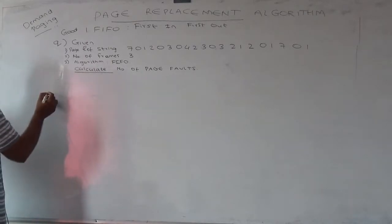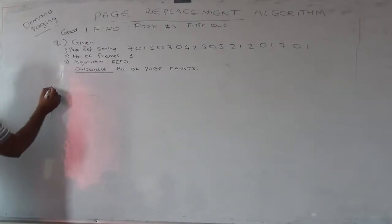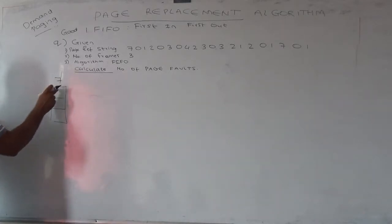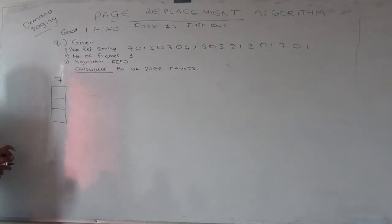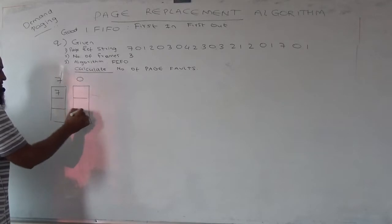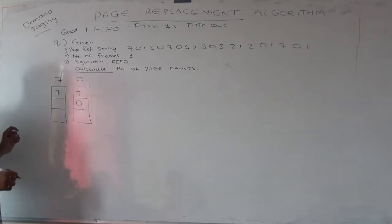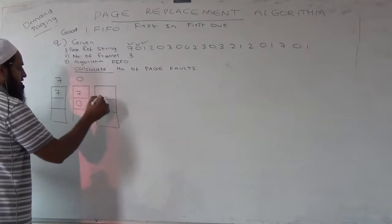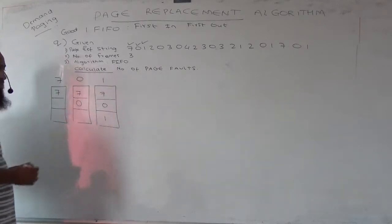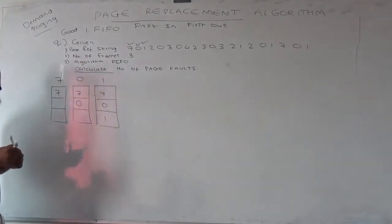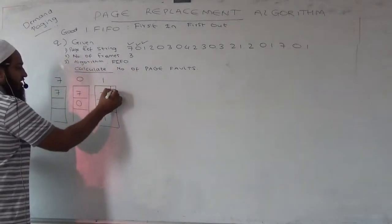So first, which page is coming in? These are my 3 frames. Which page is coming in first? 7. Is there 7 already in memory? Memory is blank — the system was just rebooted — so I have to take 7 inside. Next which page? 0. Is 0 in memory? Memory was blank, so 0 comes in. Third which page? Is 1 in memory? No, so I get it into memory.